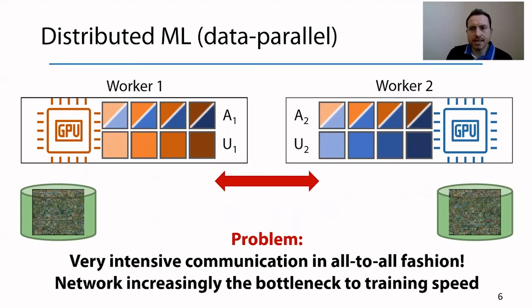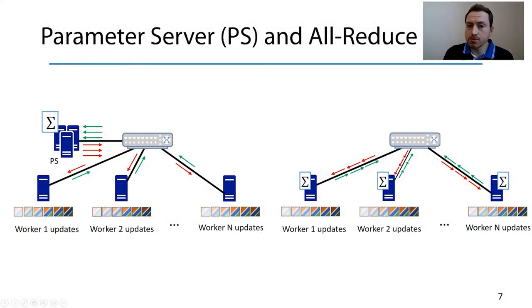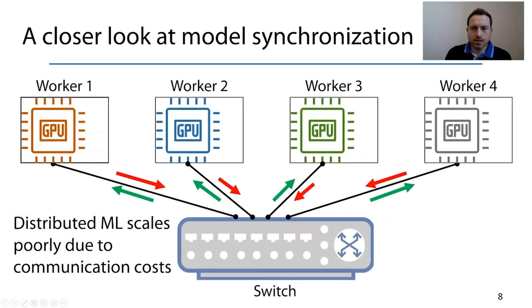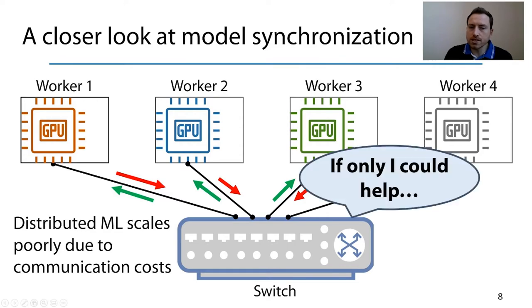This process requires very intensive communication in an all-to-all fashion, leading to significant use of the network. How is this communication step performed today? There are two common ways: one is the use of parameter servers, and the other is to use collective operations like ring-allreduce or tree-reduce. In both cases, additional network resources and computation cycles are spent, leading to either an increase in infrastructure cost or larger communication time. Since distributed machine learning scales poorly due to communication costs, we thought maybe network devices can help.